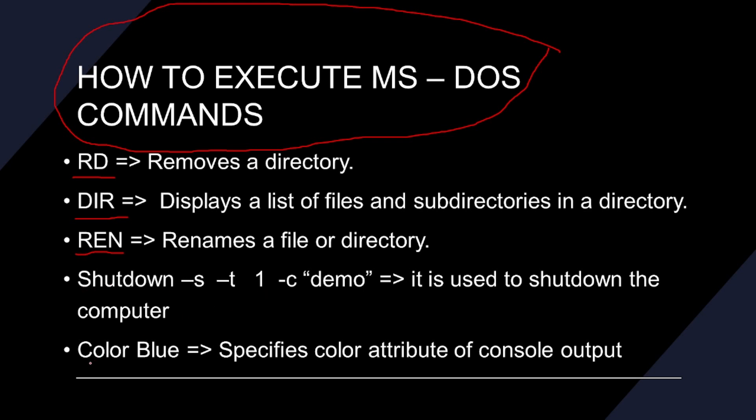The COLOR command is used for specifying the color attribute of the contents — more or less the control output. Let's see how that is done. To do this is quite simple.